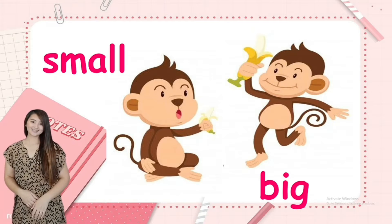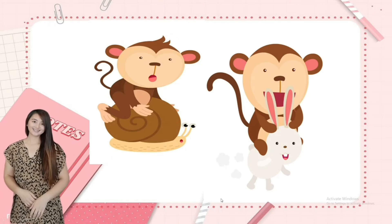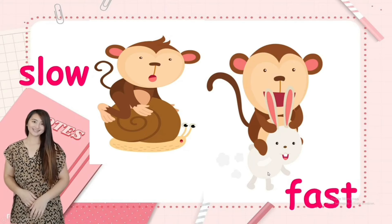Next, we have small and big. This monkey is holding a small banana and this monkey is holding a big banana. Small, big. Next, we have slow and fast. This monkey is riding a slow snail, and this monkey is riding a fast rabbit. Slow, fast.